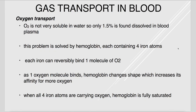Oxygen is not very soluble in water, so very little is found in plasma. But we have hemoglobin, which contains four iron atoms — each can hold one molecule of O2. That's how we solve the transport problem: instead of transporting oxygen in plasma, we transport it via hemoglobin. When all four iron atoms are carrying oxygen, the hemoglobin molecule is fully saturated with oxygen.